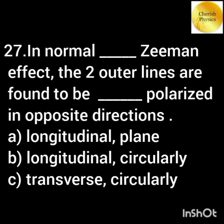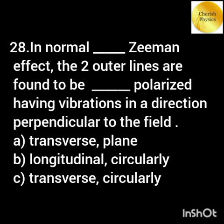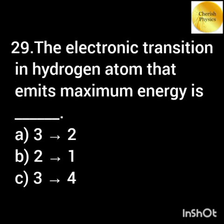In the normal Zeeman effect, the two outer lines are found to be circularly polarized in opposite directions. Perpendicular to the field, the two outer lines are found to be circularly polarized in opposite directions.